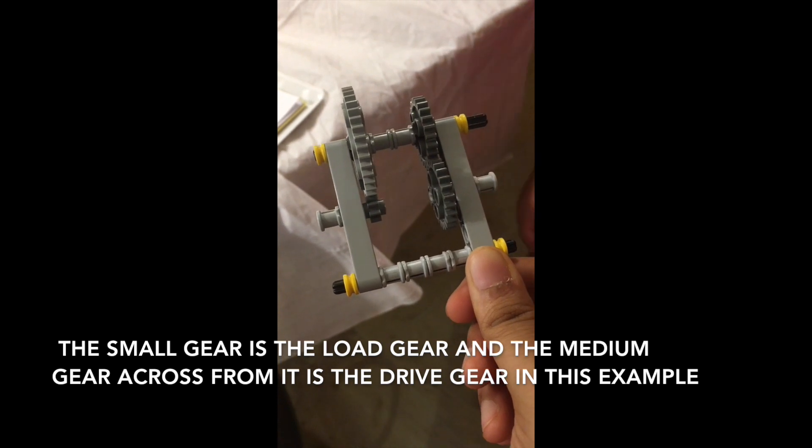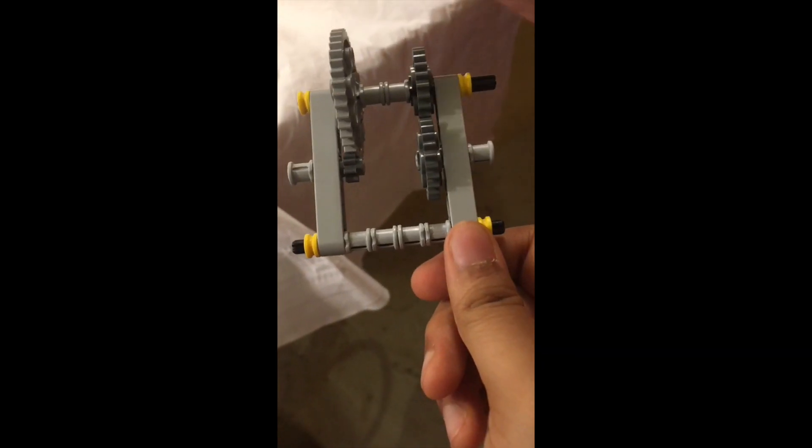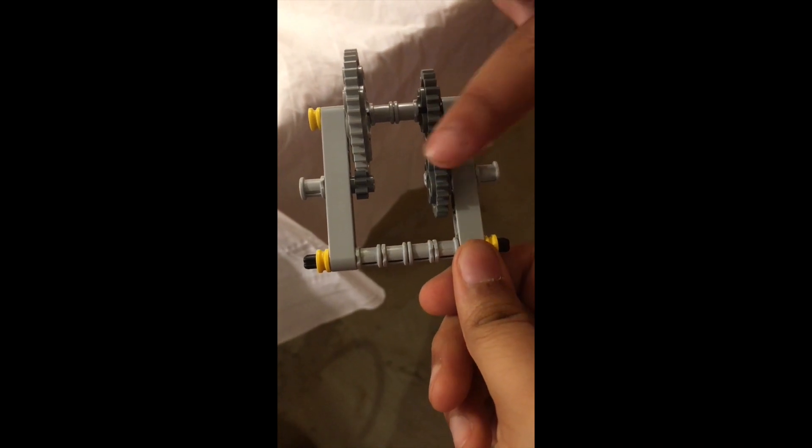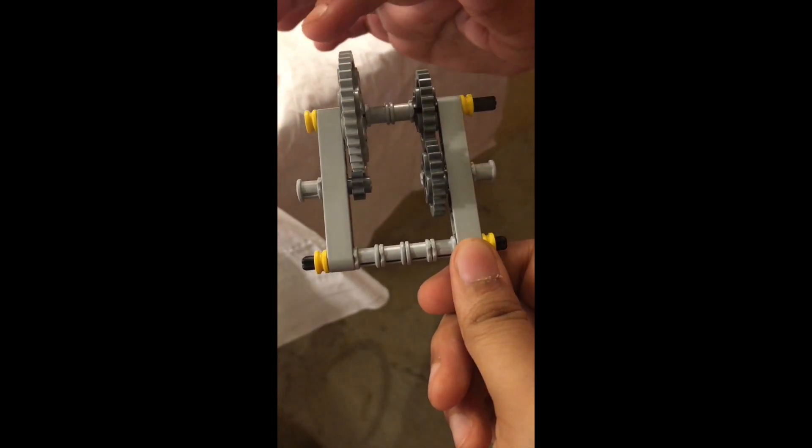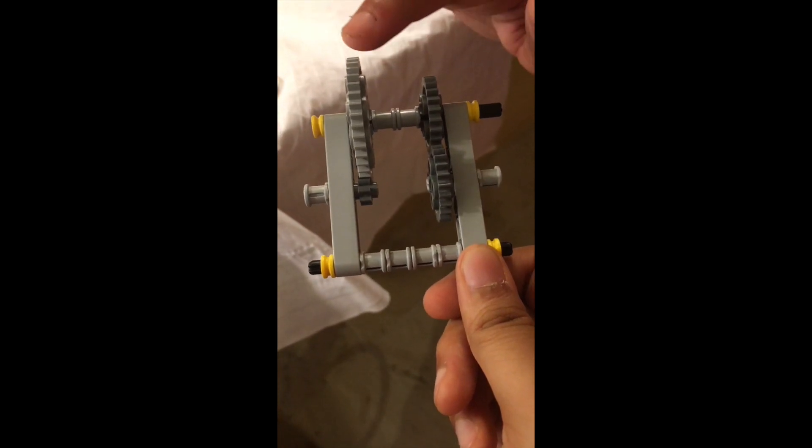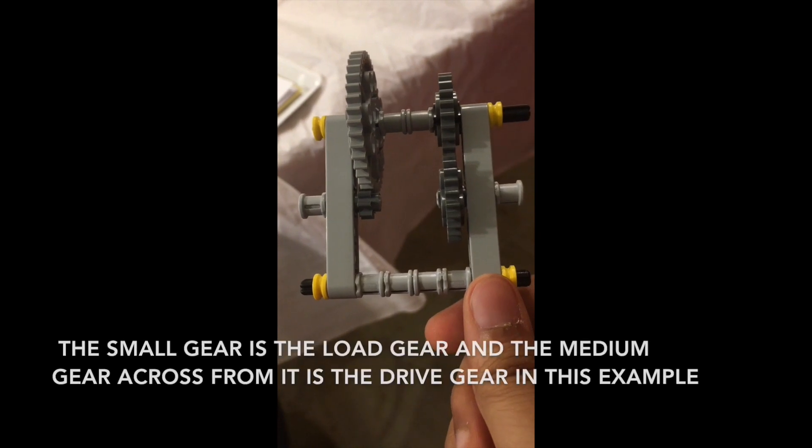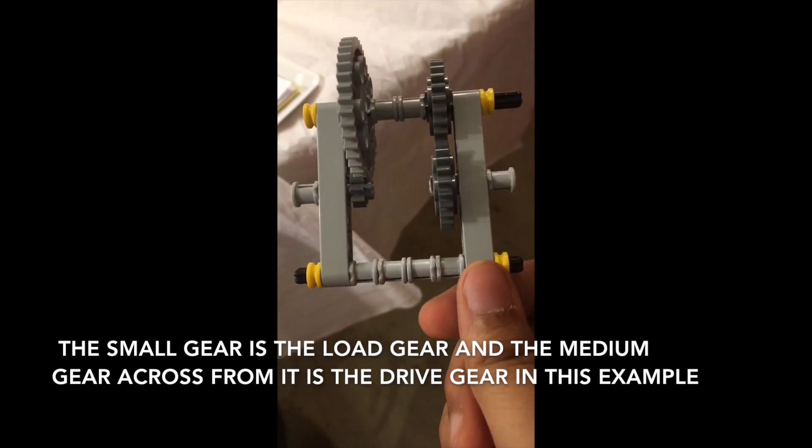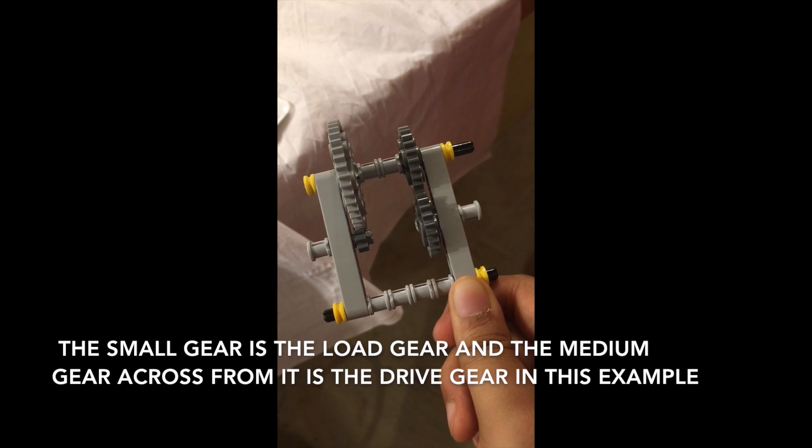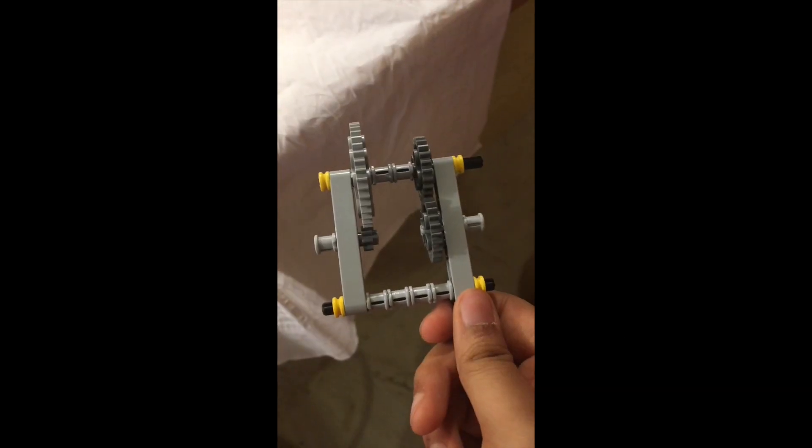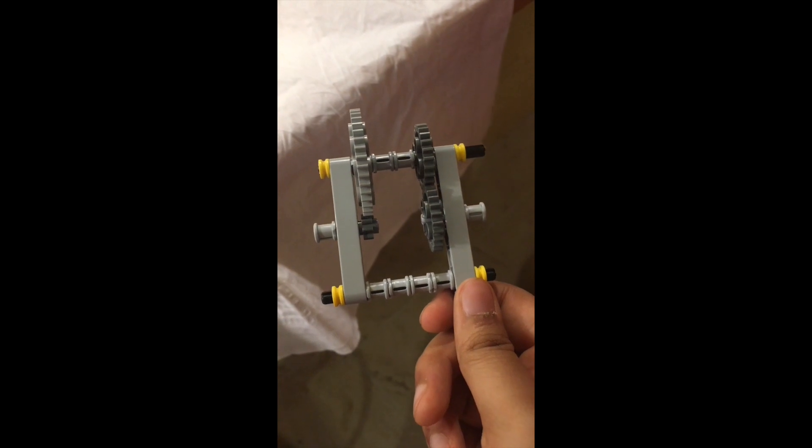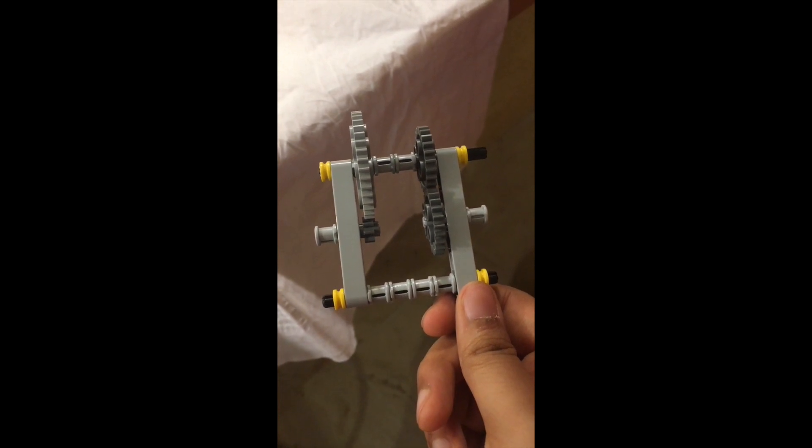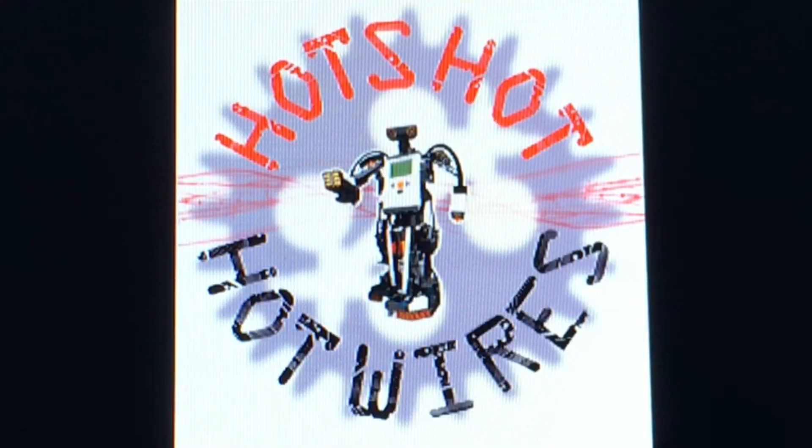And if we were to calculate it using the speed of the gears, the big gear travels at one fifth the speed of the small gear. Therefore, you get a gear ratio of one fifth, which is correct. That's why gear ratio is calculated to the speed of the drive gear to the speed of the load gear, instead of counting teeth. Thank you!